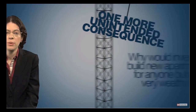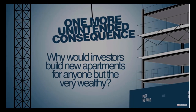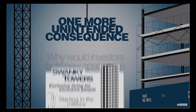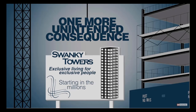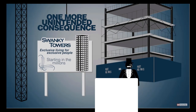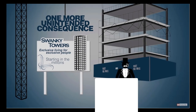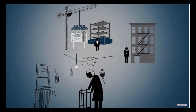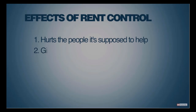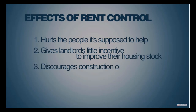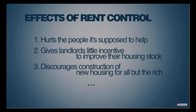Consider one more unintended consequence of rent control: why would investors build new apartments for anyone but the very wealthy in a city where rents are controlled? The answer, of course, is that they rarely do. The vast majority of new residential construction in New York is geared to the wealthy who can pay rents above the controlled limit, or who are willing to buy their apartments outright as condos or co-ops. These expensive units are well beyond the reach of the middle class, let alone those lower on the economic stratum. In sum, rent control hurts the people it's supposed to help, gives landlords little incentive to improve their housing stock, and discourages construction of new housing for all but the rich. And the voters love it.